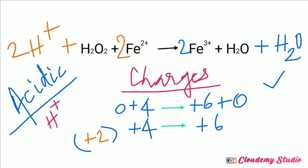The balanced equation for this reaction is: 2 moles of hydrogen ions plus 1 mole of hydrogen peroxide plus 2 moles of iron 2 plus ions gives 2 moles of iron 3 plus ions plus 2 moles of water.